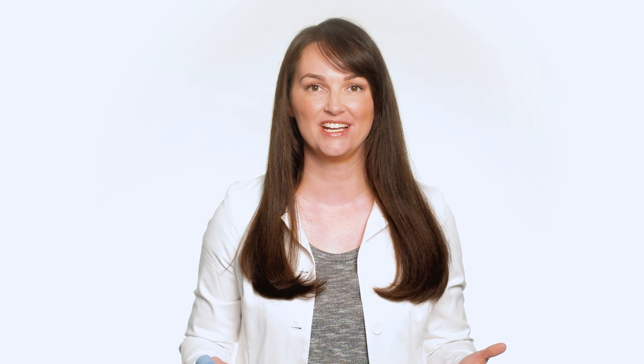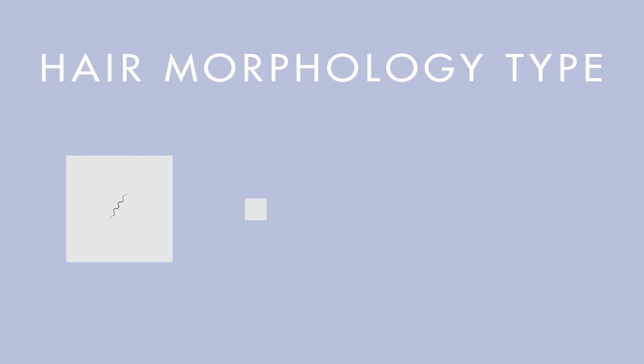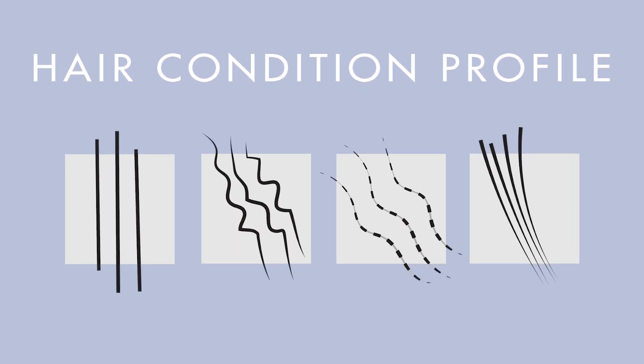Using the power of proprietary technology, high-resolution images, and advanced artificial intelligence, each scan rapidly provides an in-depth look at hair morphology, condition profile, and scalp condition. Hair morphology type is determined by curl pattern, texture, and density. Hair condition profile is determined by the main hair stressor and the exposure level. Scalp health is determined by the results from the scan of the scalp.